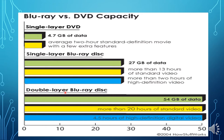For a double layer Blu-ray disc, the capacity increases to 54 GB of data, allowing more than 20 hours of standard video and 4.5 hours of high definition digital video. This comparison clearly shows that Blu-ray disc is more beneficial.